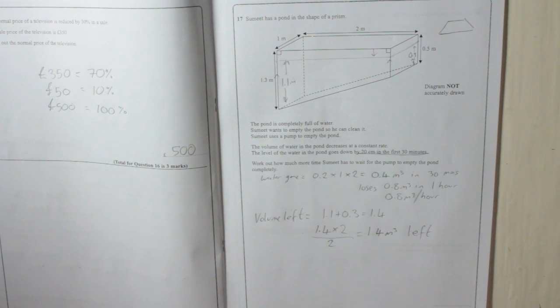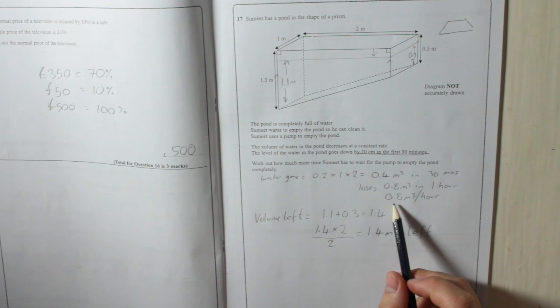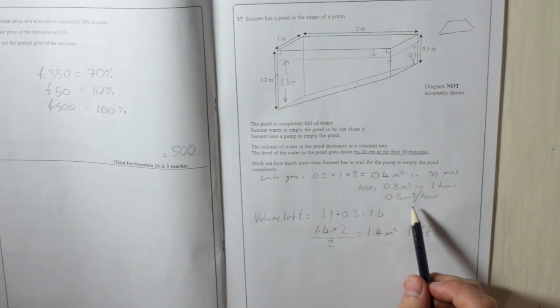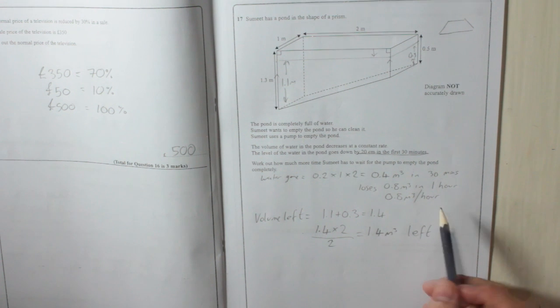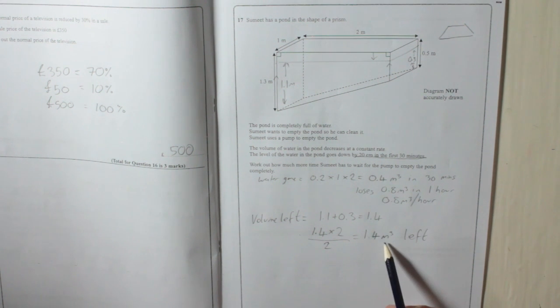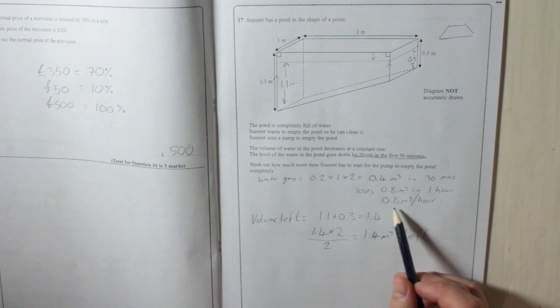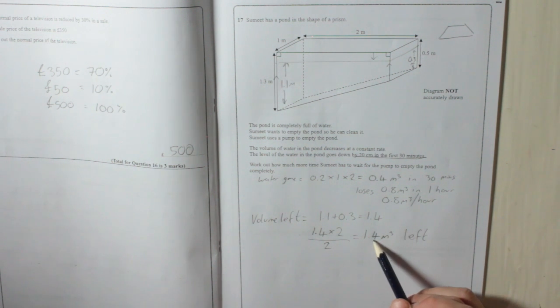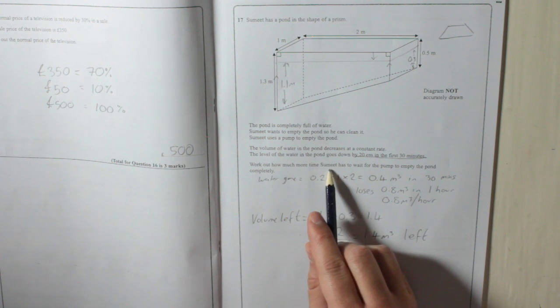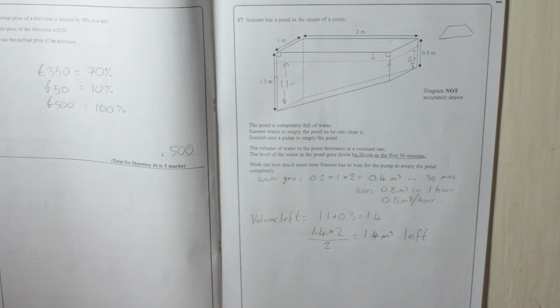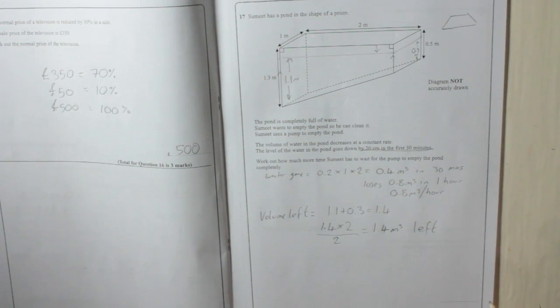So we're nearly there. It's losing 0.8 meters cubed per hour. There's 1.4 meters cubed left. So however many 0.8s fit into 1.4, that's how many hours are left. We're just going to do 1.4 divided by 0.8.